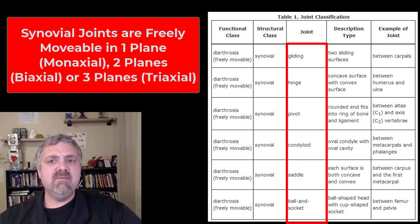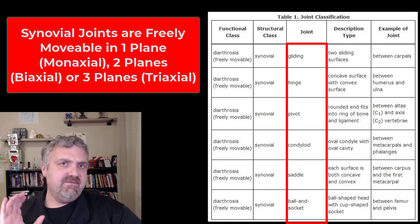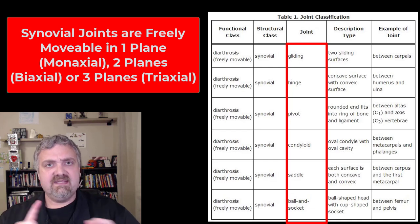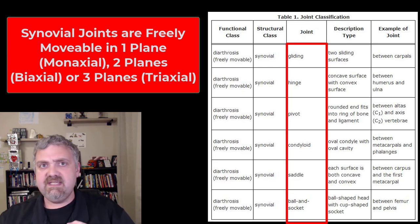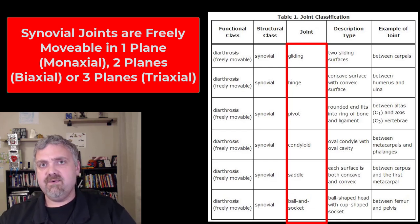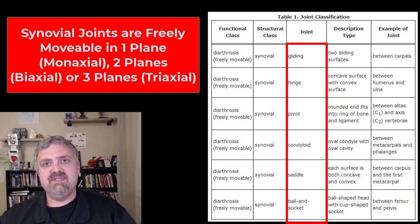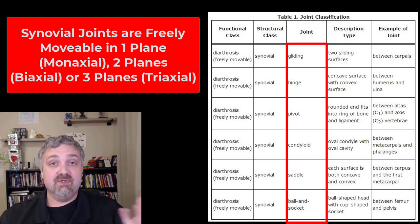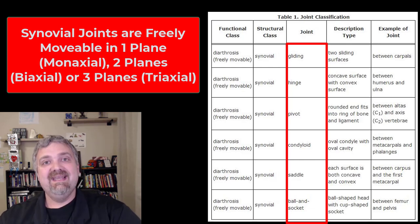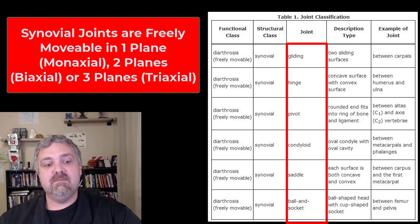So that's the functional classification of joints: synarthrosis are immovable, amphiarthrosis are slightly movable, and diarthrosis are freely movable synovial joints. I hope this helps. Have a wonderful day. Be blessed.